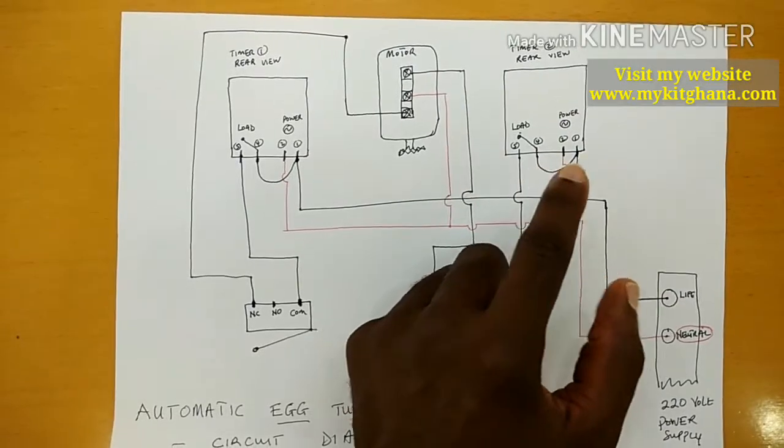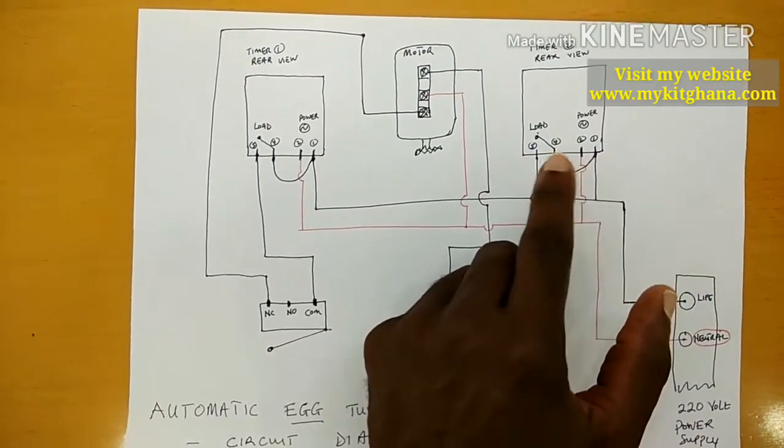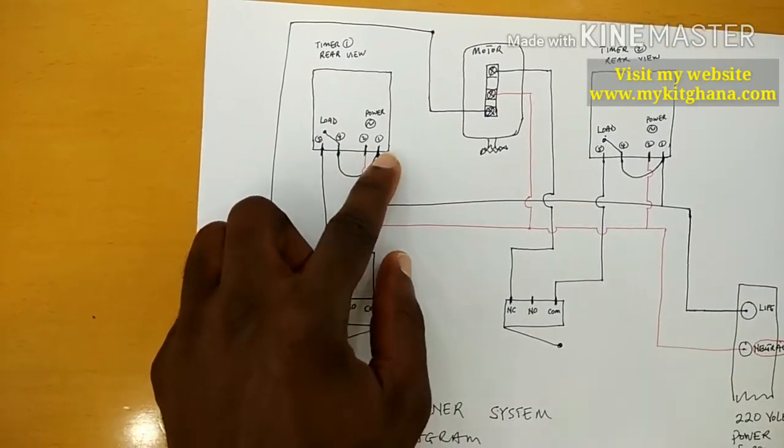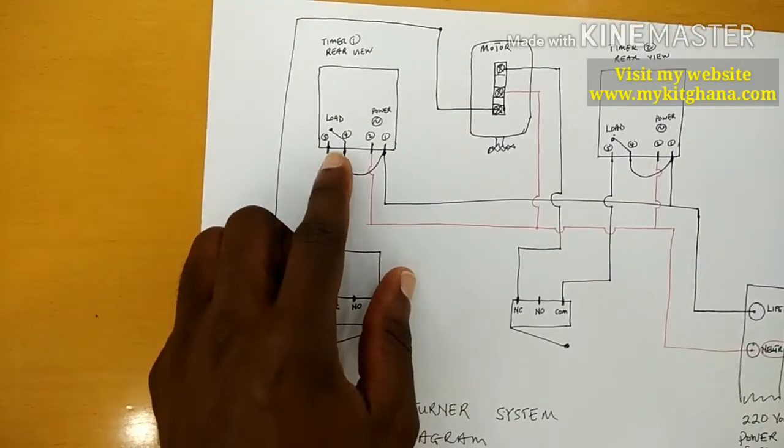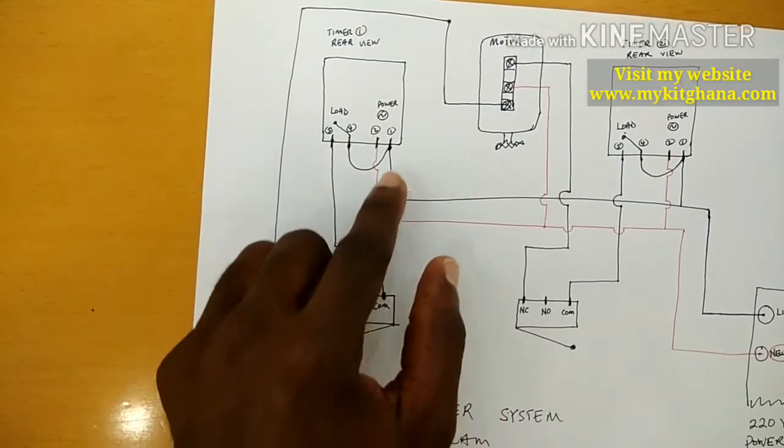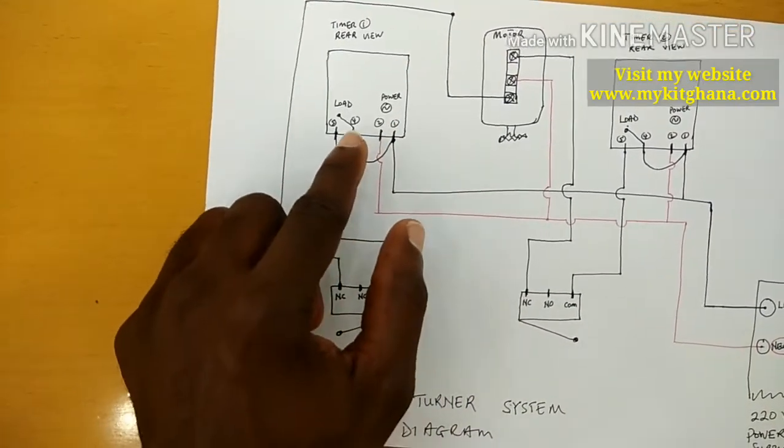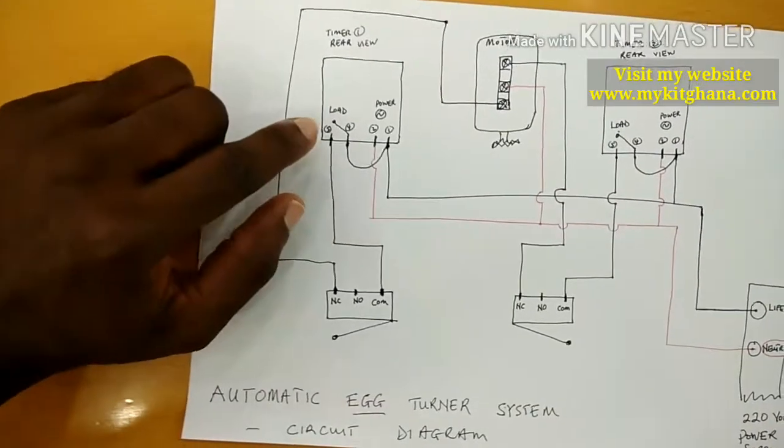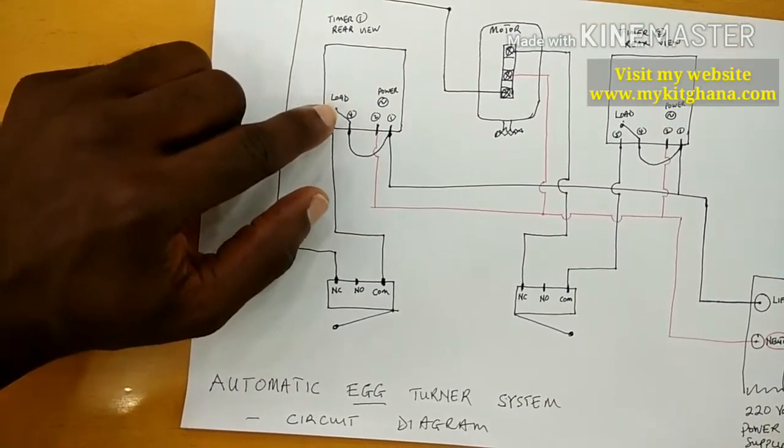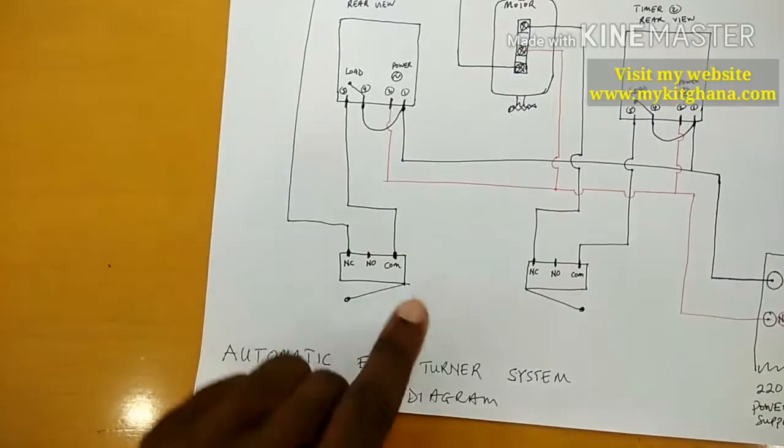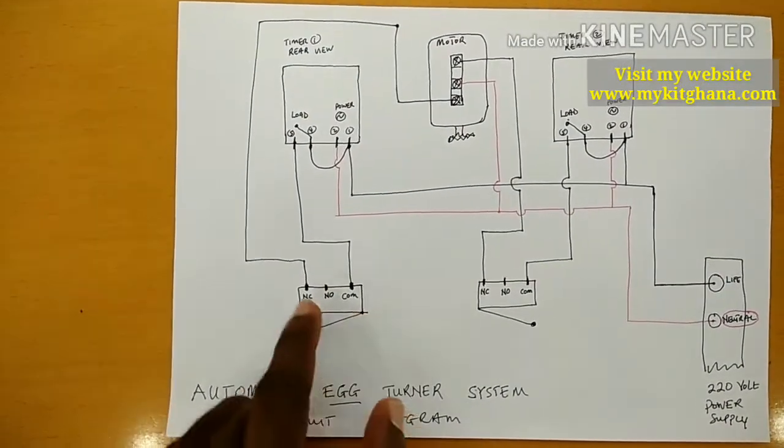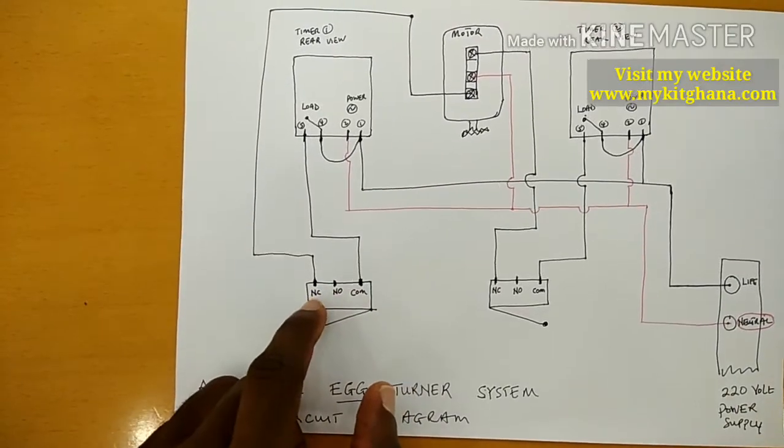Same as the second timer switch, connect port 1 to port 4. It's the same lifeline running through to port 4. When the switch is activated, we have the life continuing to the common of the limit switch, and then since it's normally closed, you have the flow going to one side of the motor.